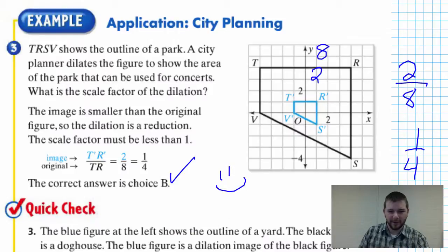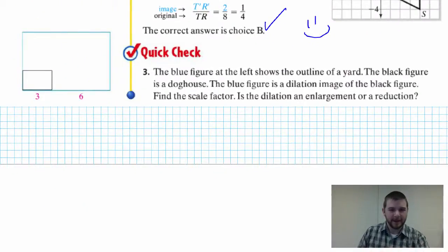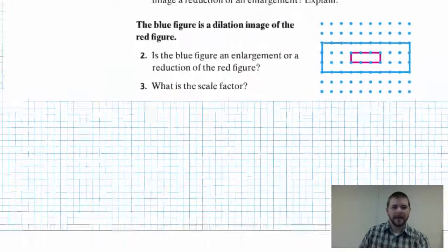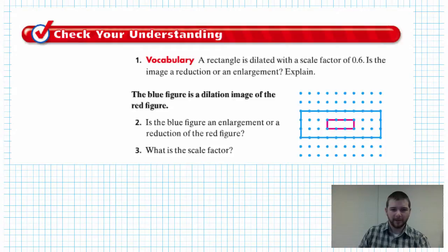Quick check problem: the blue figure at the left shows the outline of a yard. The black figure is a doghouse. The blue figure is a dilation image of the black figure. Find the scale factor. Is the dilation an enlargement or a reduction? And your check your understanding problems, all three of them in this section.